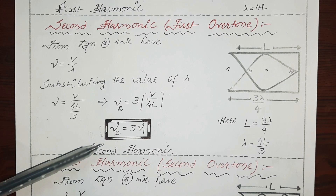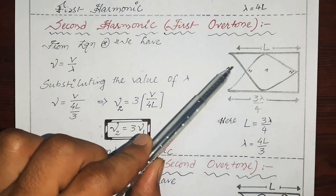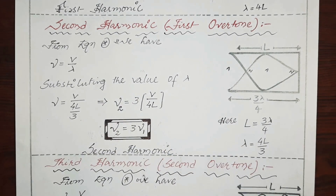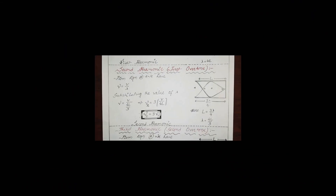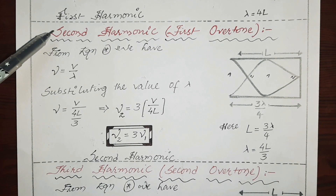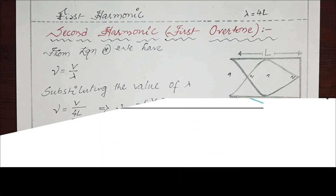This is the equation of second harmonic: nu_2 equals 3 nu_1, where 2 antinodes and 2 nodes are formed, compared to 1 antinode and 1 node in the first harmonic case. One more important point to note is that this second harmonic is also called the first overtone.